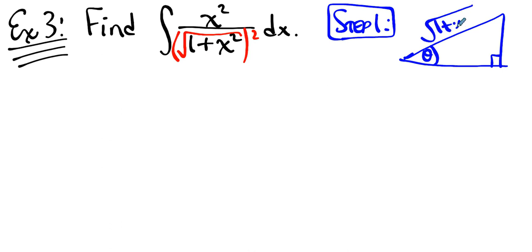The other two sides are 1 and x. And it literally does not matter where you put them. If you put them this way, you're going to use tangent and secant. If you put them the other way, you're going to use cotangent and cosecant. Either way, you will get an integral that is doable.